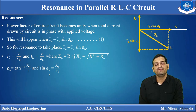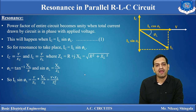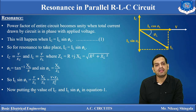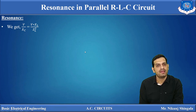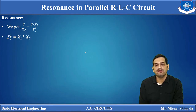This we get when we draw the impedance triangle for the RL branch. So IL sin φL becomes (V / ZL) × (XL / ZL), that is V·XL / ZL². Putting the values of IC and IL sin φL into the resonance condition — equation 1 — we get V / XC = V·XL / ZL². V cancels from both sides. So ZL² = XL · XC.